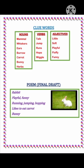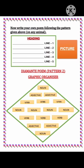So the poem is: Rabbit. Playful, funny. Running, jumping, hopping. Likes to eat carrot. Bunny. You can draw any picture relevant to the topic. Now write your own poem following the pattern given above. You can write on any animal and draw a relevant picture at the right side.